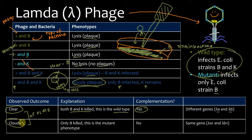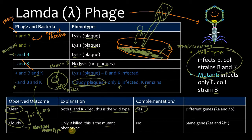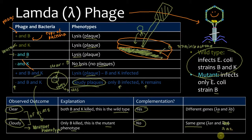If we observe cloudy plaques in this cross, we see the mutant phenotype — which we determined was cloudy plaques meaning only B was killed. Therefore, complementation did not occur, and they are in fact alleles of the same gene. So this should actually be labeled lambda A2.